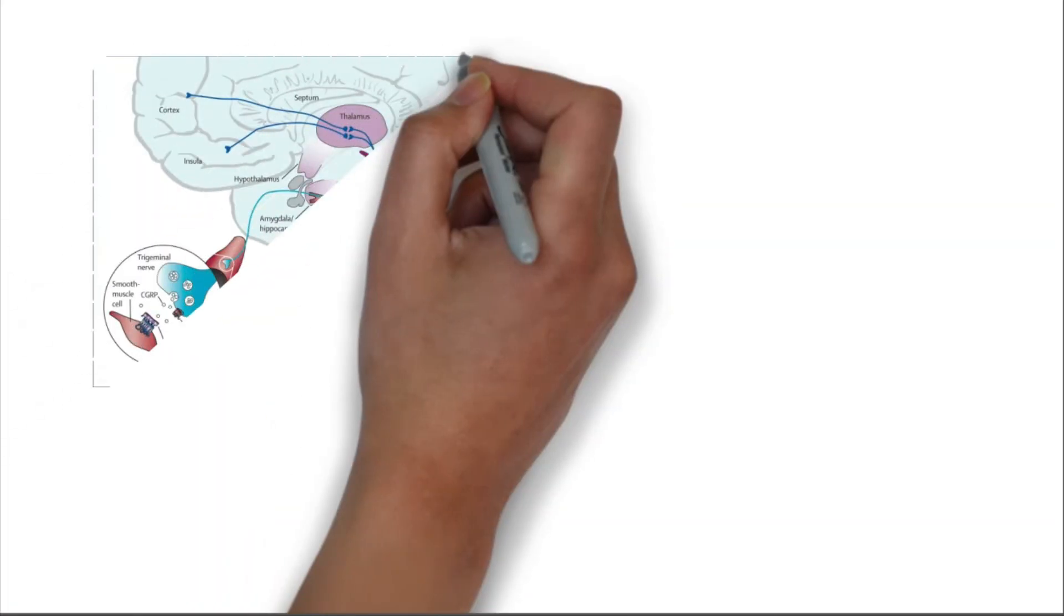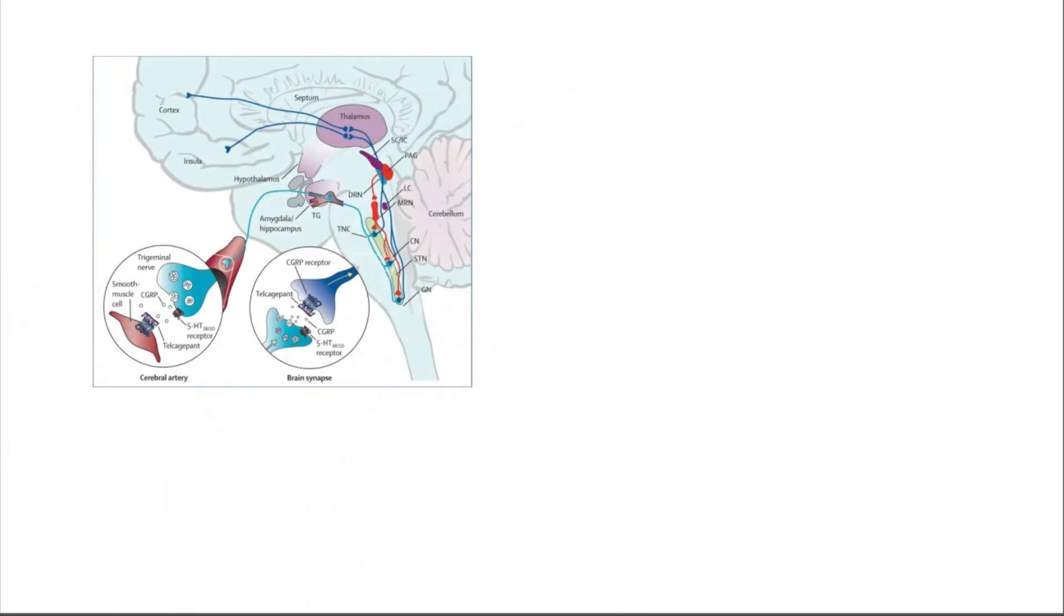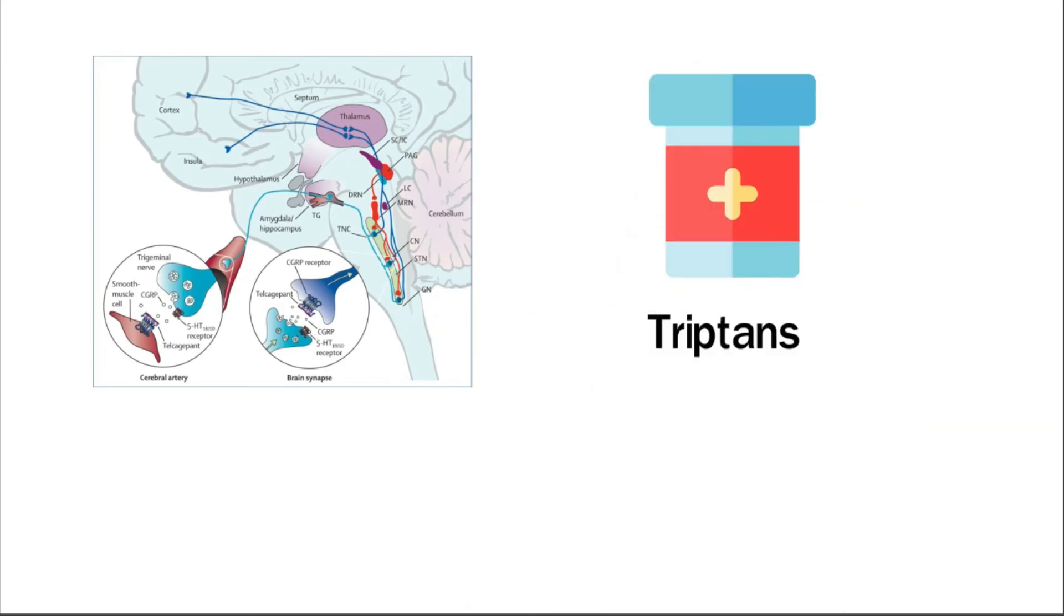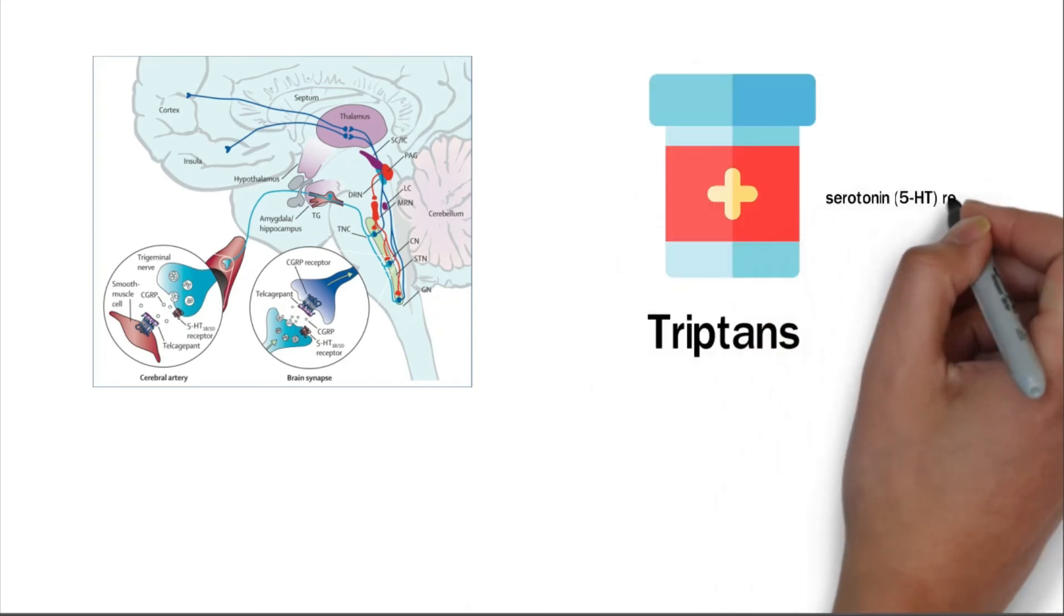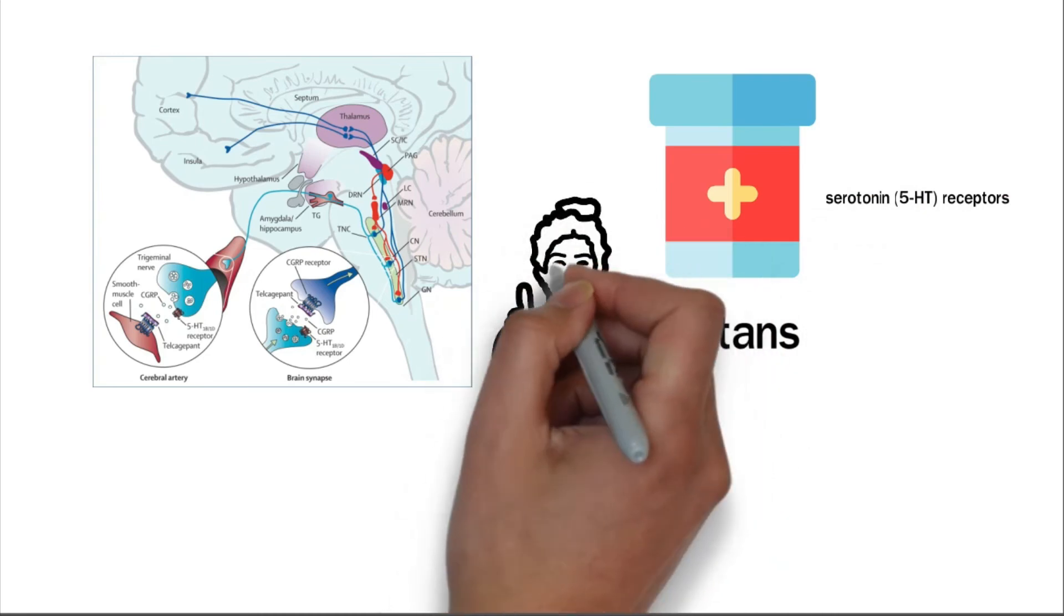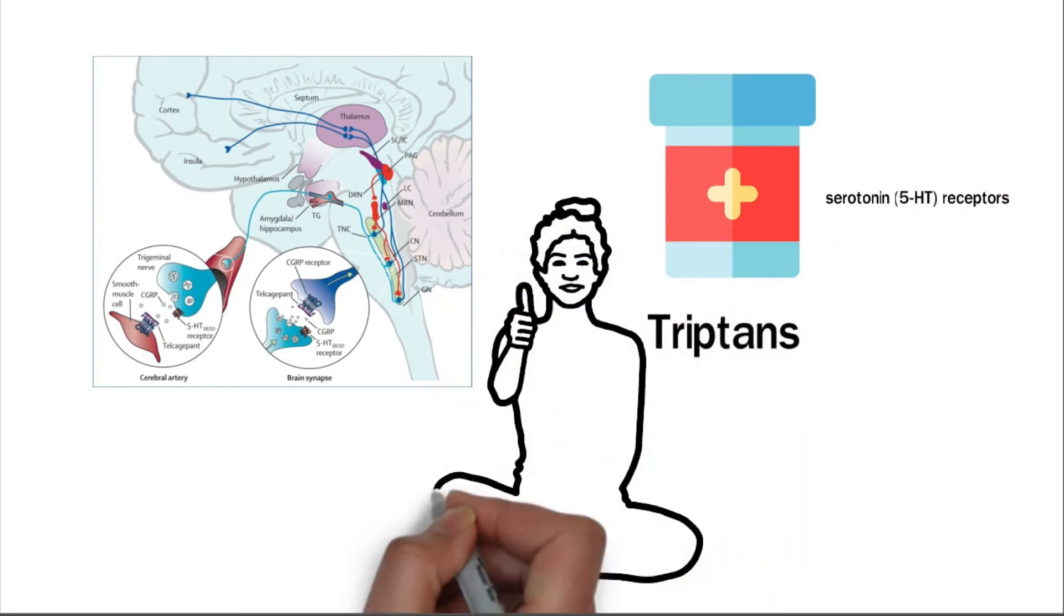CGRP monoclonal antibodies are medications that target CGRP and CGRP receptors. Tryptans are another class of drugs used to treat migraine. These drugs act on serotonin 5-HT receptors. While these are powerful tools for treating migraine, at best these medications are effective at treating 50% of the patient population.